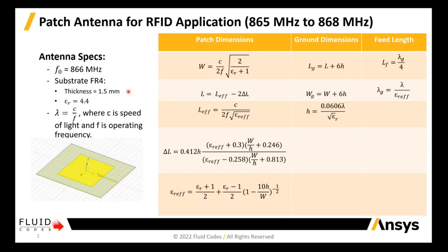I'm going to design a microstrip patch antenna that operates at 866 MHz, placed on top of a 1.5 mm FR4 substrate. Using the formula, you can find the width and the length of the patch antenna, the ground or substrate dimensions, as well as the feed line.